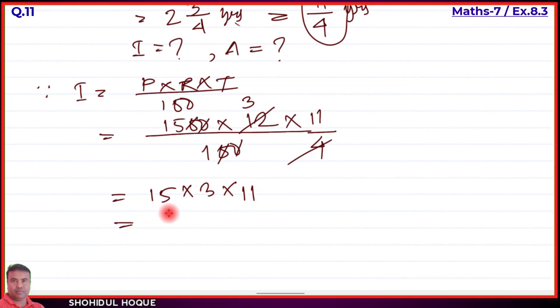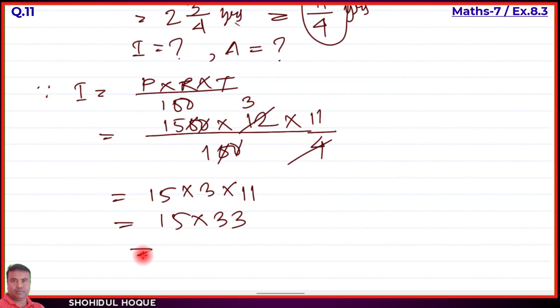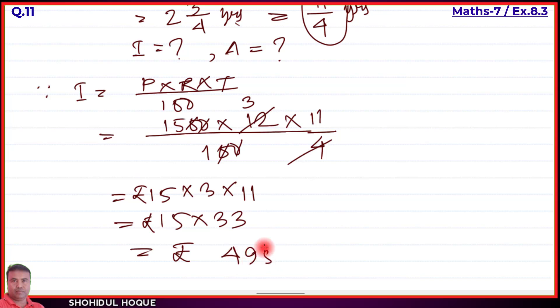Calculating: 15 × 3 = 45, then 45 × 11 = 495. Therefore I = rupees 495.